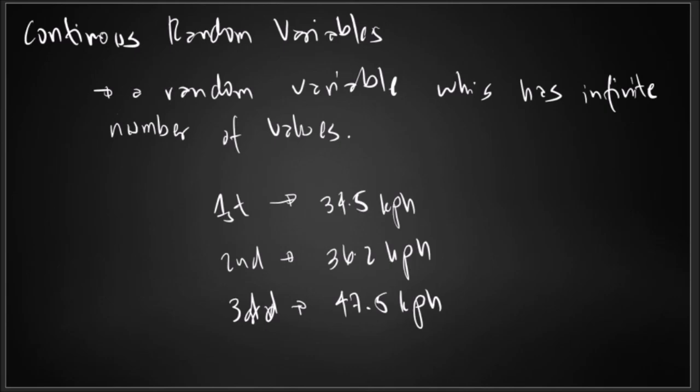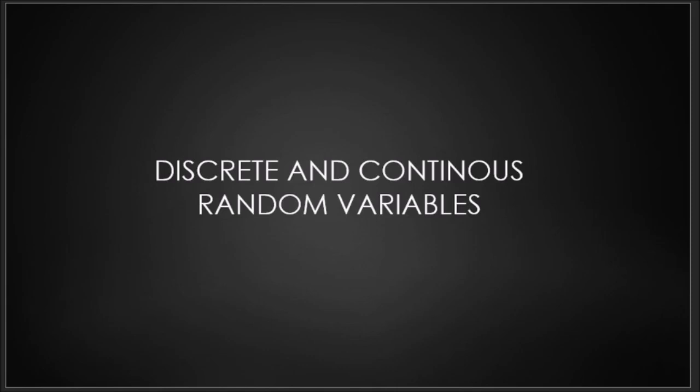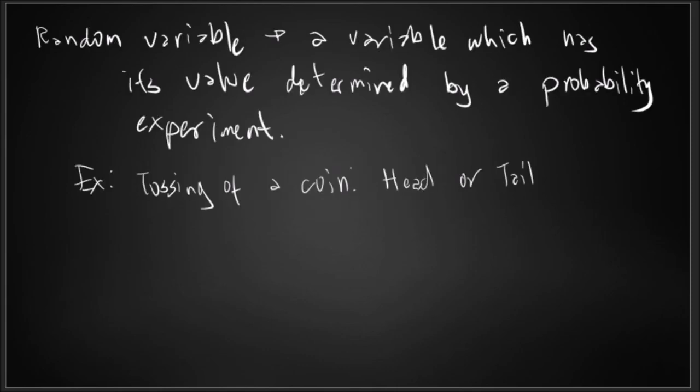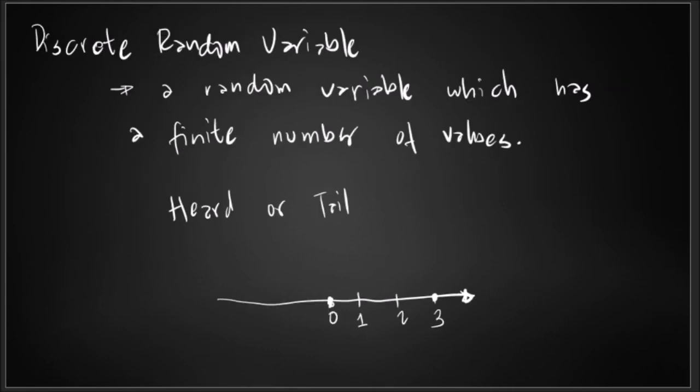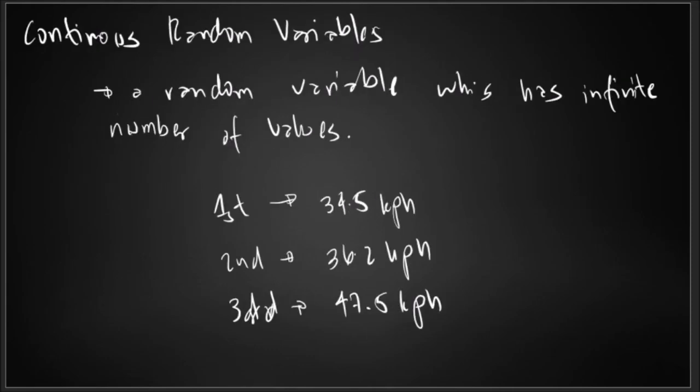So in this video, we have discussed discrete and continuous random variables: the definition of a random variable, the definition of a discrete random variable, and the definition of a continuous random variable. I hope you learned something from this short discussion. If you have questions, just comment in the comment box below. Thank you for watching and enjoy learning.